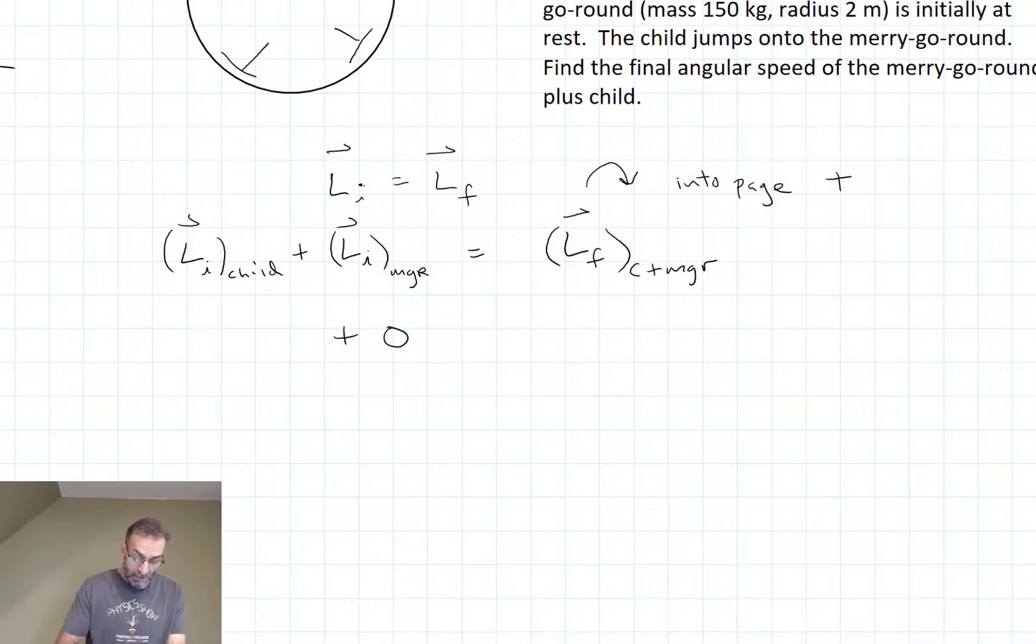So the angular momentum of the object moving in a straight line, the child in this case, is their mass times their velocity times d-perpendicular, and in this case, that's the radius of the merry-go-round. And it's in the positive direction. If they collide with something like the merry-go-round, it's going to cause it to turn clockwise. So this is a positive angular momentum.